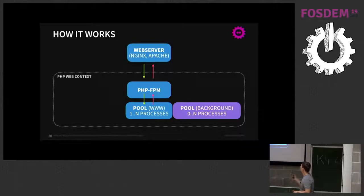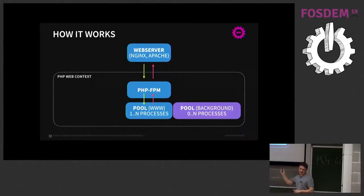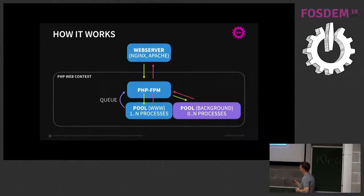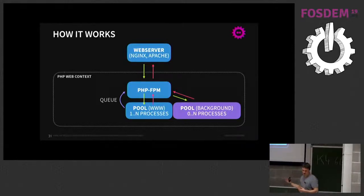PHP-FPM gives the ability to create one or more pools that isolate resources. You can define a background pool configured to have no processes on startup and spawn up to N processes dynamically. PHP-FPM sends the request to the pool, the pool queues the request, and when handled it returns the response back through PHP-FPM to the web server.